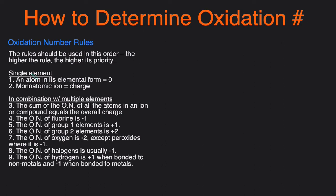I've also broken these rules down into two categories: those for single elements, and those for combinations with multiple elements. Let's start with the rules for single elements. Rule number one: if you have an atom that is in its elemental form, then its oxidation number will be zero.